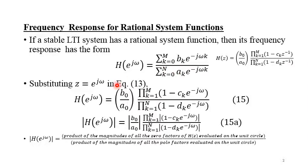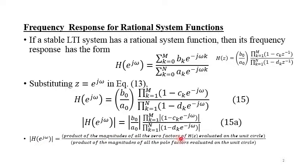Both H(jω) and H(z) are complex, so we can represent them in terms of magnitude and phase. The magnitude |H(e^(jω))| equals the magnitude of the scaling factor times the product of magnitudes of all zero factors of H(z) evaluated on the unit circle, divided by the product of the magnitudes of all pole factors evaluated on the unit circle.